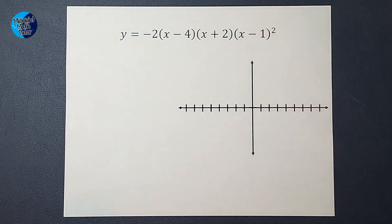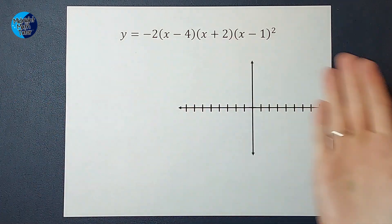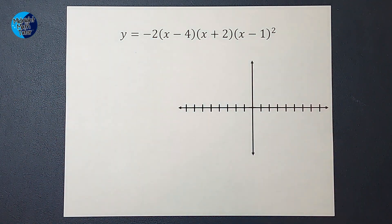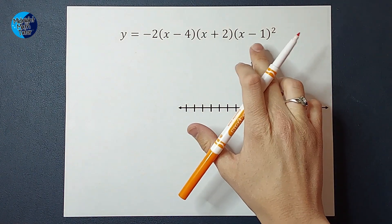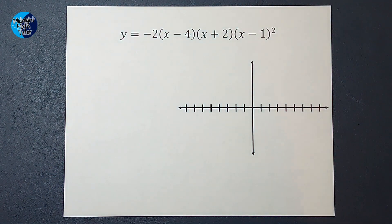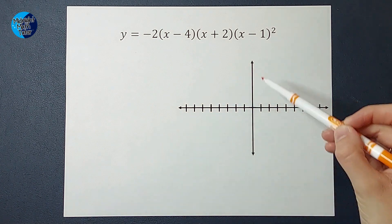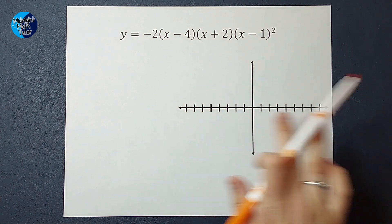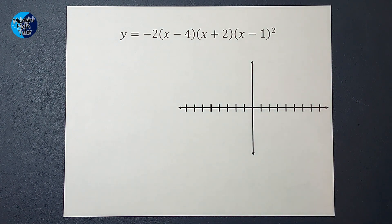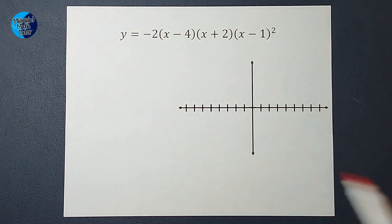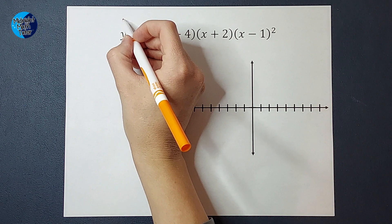So first I need to factor, but we are already factored here — none of these can be factored anymore. I could write out x minus 1 twice since it's squared, but I don't really need to do that. Next, we are looking for our zeros — where our graph crosses the x-axis, where y is equal to zero. To figure that out, we just need to set this equal to zero.